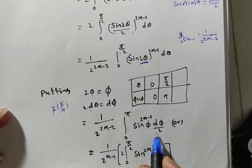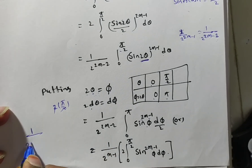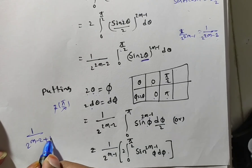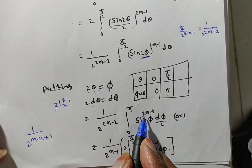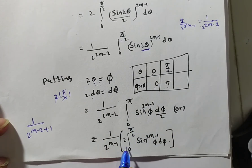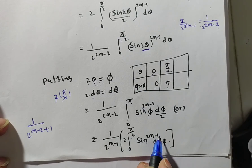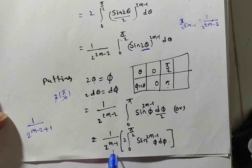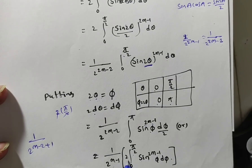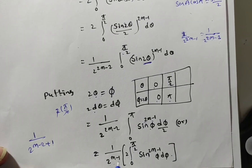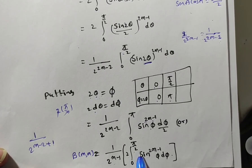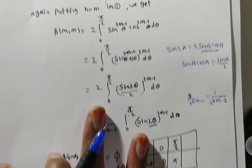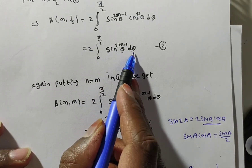This 1/2 is also taken outside. Now the integral from 0 to pi of sin phi to the power 2m minus 1 d phi can be written as 2 times the integral from 0 to pi/2 of sin phi to the power 2m minus 1 d phi, since sine is symmetric about pi/2. Because in definite integrals we can rename the variable, this equals 2 times the integral from 0 to pi/2 of sin theta to the power 2m minus 1 d theta, which is exactly equation number 2, the expression for beta of m comma 1/2.